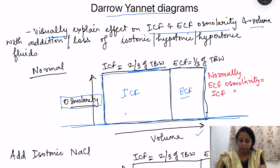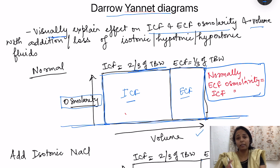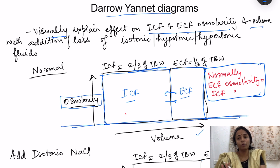The volume of ICF and ECF is different, but the osmolarity of ICF and ECF is more or less the same. If any hypotonic or hypertonic fluid is added, water movement occurs across the membrane between ECF and ICF, and ultimately the osmolarity of ICF and ECF will become the same. Let us see what changes in ECF and ICF osmolarity and volume occur with the addition of various fluids.